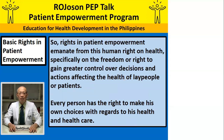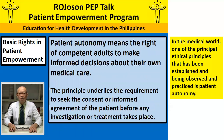Entitlement includes access to adequate health care facilities and services. Rights in patient empowerment emanate from this human right on health, specifically on the freedom or right to gain greater control over decisions and actions affecting the health of lay people or patients. Every person has the right to make his own choices with regards to their health and health care. In the medical world, one of the principal ethical principles is patient autonomy — the right of competent adults to make informed decisions about their own medical care.